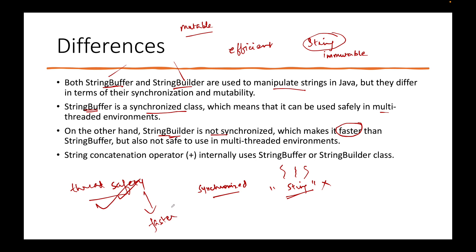So the major difference is thread safety, and from that comes the performance implication — StringBuffer is slower while StringBuilder is faster. Depending on the scenario and use case we can prefer either, but the similarity between these two is that they are both used to create mutable strings for efficient string manipulation. In the next slide we will discuss the significance of why these two classes came into being.